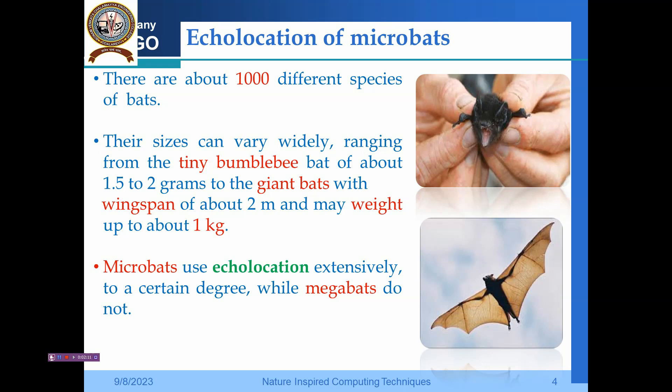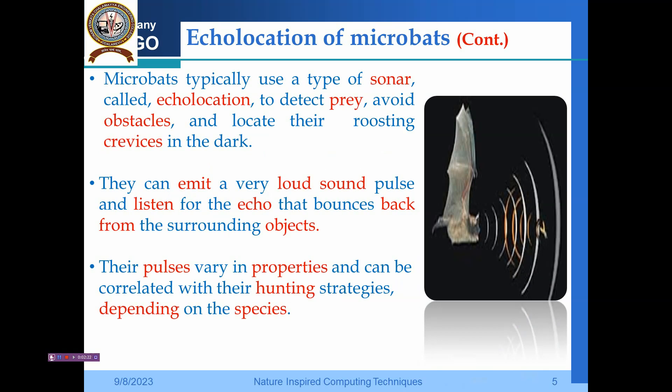The microbats use echolocation extensively to a certain degree, while the megabats don't use it. Now we focus on the echolocation of the microbats. Microbats typically use a type of sonar called echolocation to detect prey and also avoid obstacles.